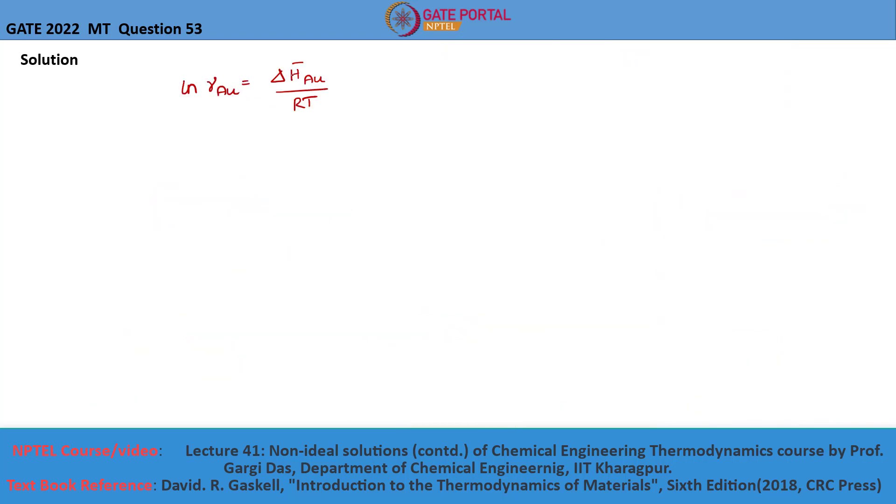ln gamma_AU equals delta h bar AU by RT, which is equal to minus 8300 divided by 8.314 multiplied by 1400, which is equal to minus 0.713.